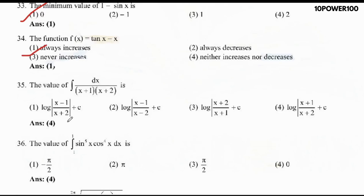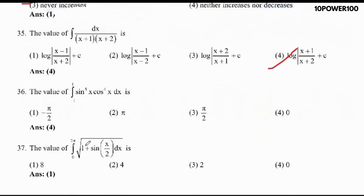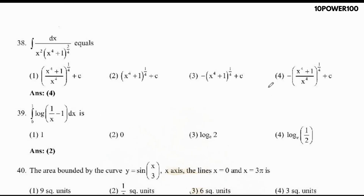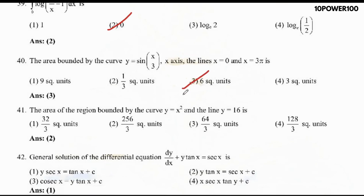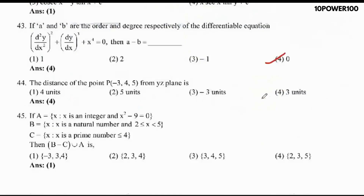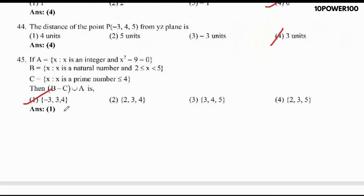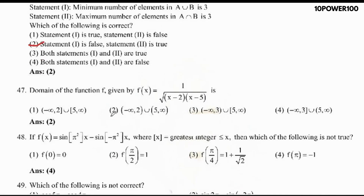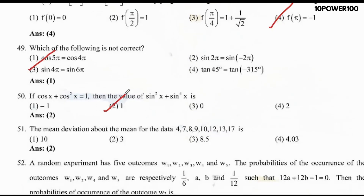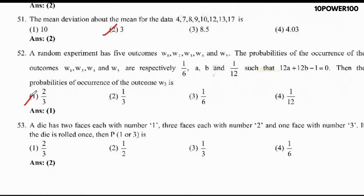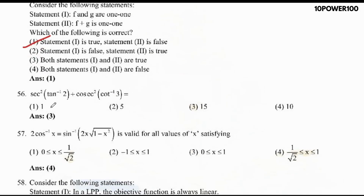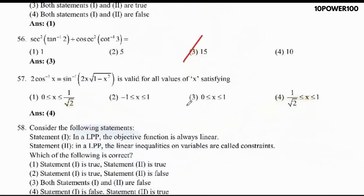Question 31: option 4. 32: option 2. 33: option 1. 34: option 1. 35: option 4. 36: option 4. 37: option 1. 38: option 4. 39: option 2. 40: option 3. 41: option 2. 42: option 1. 43: option 4. 44: option 4. 45: option 1. 46: option 2. 47: option 2. 48: option 4. 49: option 1. 50: option 2. 51: option 2. 52: option 1. 53: option 2. 54: option 3. 55: option 1.